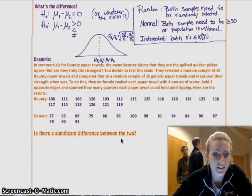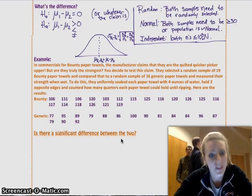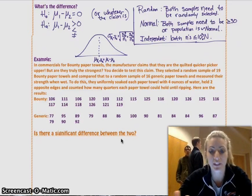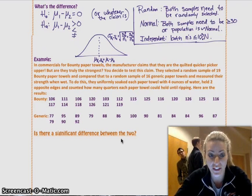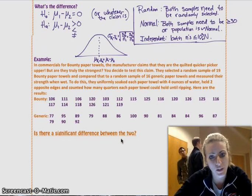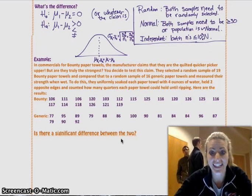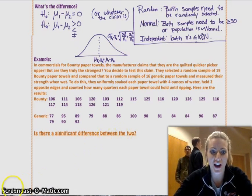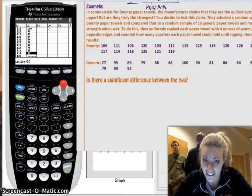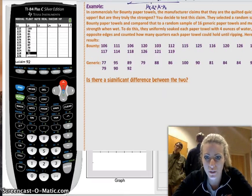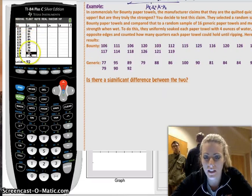So, for Bounty, you have 19 numbers. For the generic, you have 16 numbers, data points. And then the question is, is there a significant difference between the two? So, you're going to want to do a hypothesis test. State, plan, do, conclude, the usual, everything that we've been doing. But now for the difference in means. And so, first step is we have to enter all of the data into our handy-dandy calculator. As you can see, I have officially entered my data. List one is my Bounty, and list two is my generic.